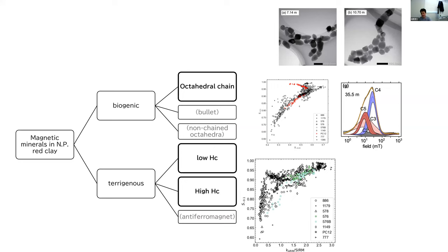Generally speaking, sediment with a higher amount of terrigenous magnetite, terrigenous component, seems to be better in terms of paleomagnetic recording,